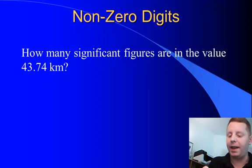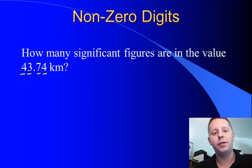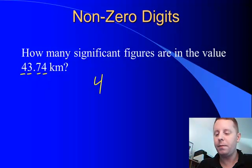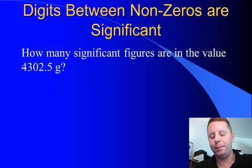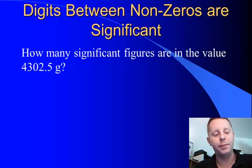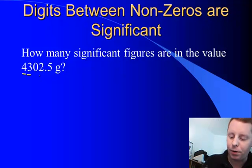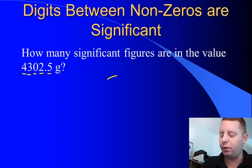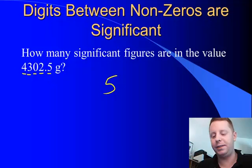In this case, we have one, two, three, four non-zero digits, so we must have four significant figures. If we take another example, something like 4,302.5 grams, how many significant figures do we have? Well, we have four non-zero significant figures, and we have a zero between significant figures, for a total of five sig figs.